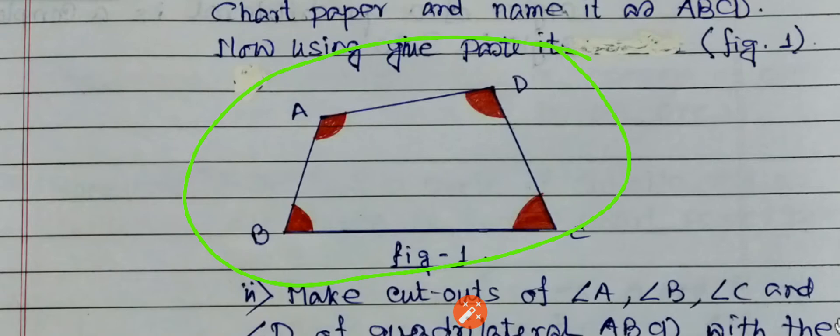And make cutouts of angles—angle A, angle B, angle C and angle D of the quadrilateral. Before that, mark the angles like this way.